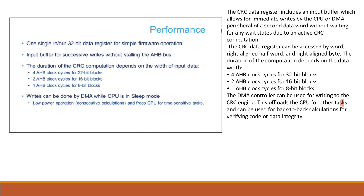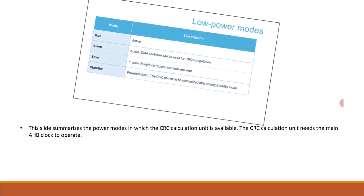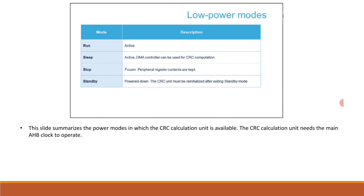Writes can be done by DMA or CPU in sleep mode, enabling low-power operation. In terms of power modes: in Run and Sleep modes, the DMA controller can be used for CRC computation. In Stop mode, the CRC unit is frozen. In Standby mode, which is power-down, the CRC unit must be reinitialized after exiting standby. The CRC calculation unit requires the main AHB clock to operate.